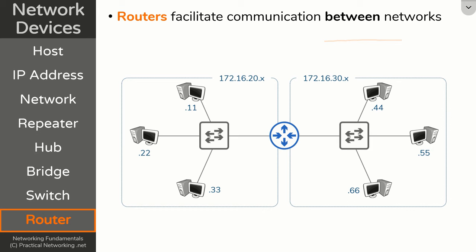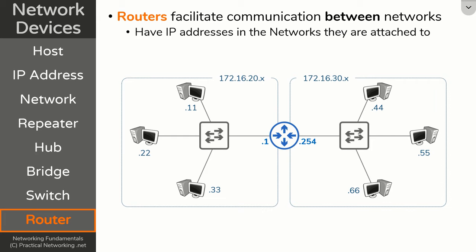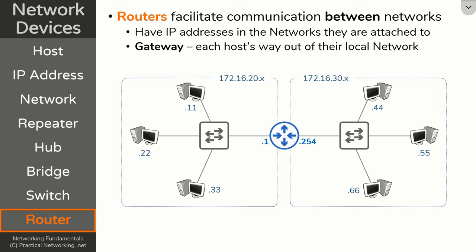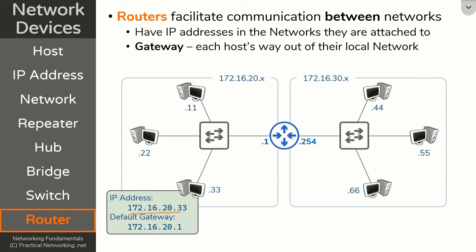When we say a router learns which networks it is attached to, what we mean is that a router has an IP address in every network it is attached to. For example, when this router is attached to this network, it is given an IP address in that network. This interface's identity is the IP address 172.16.30.254. This IP address is going to serve as what's known as a gateway. A gateway is a host's way out of their local network. For example, this host over here has the IP address 172.16.20.33. If that host wants to speak to something on a different network, it knows it's going to have to go through a router, and the IP address of that router is stored as the host's default gateway — in this case, 172.16.20.1, which is this interface's IP address on that router.